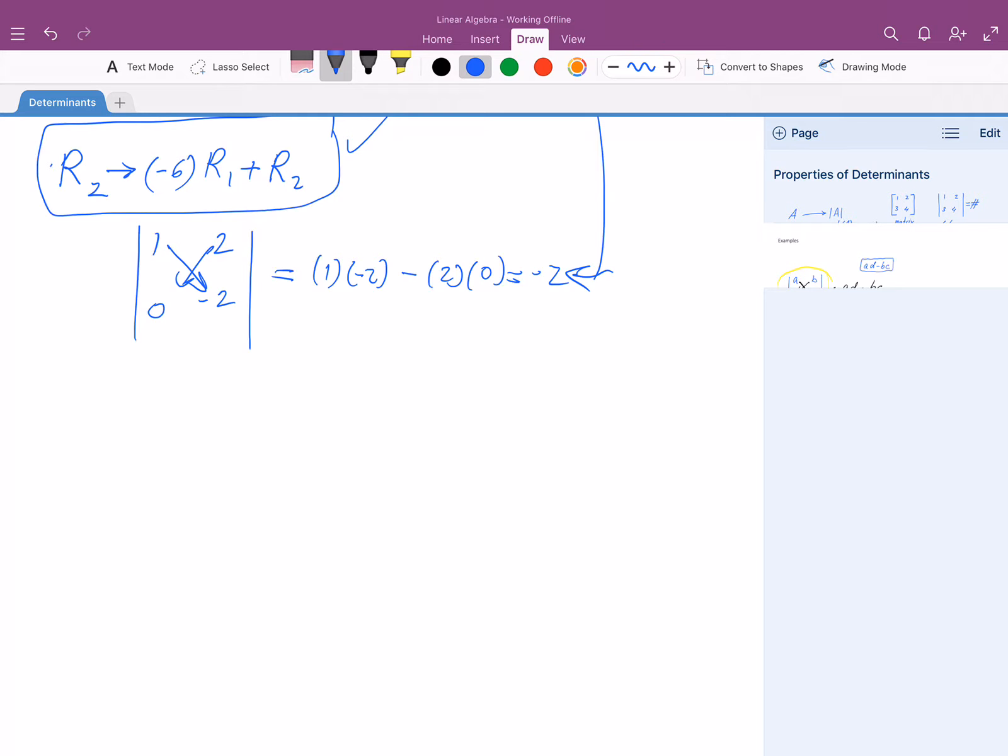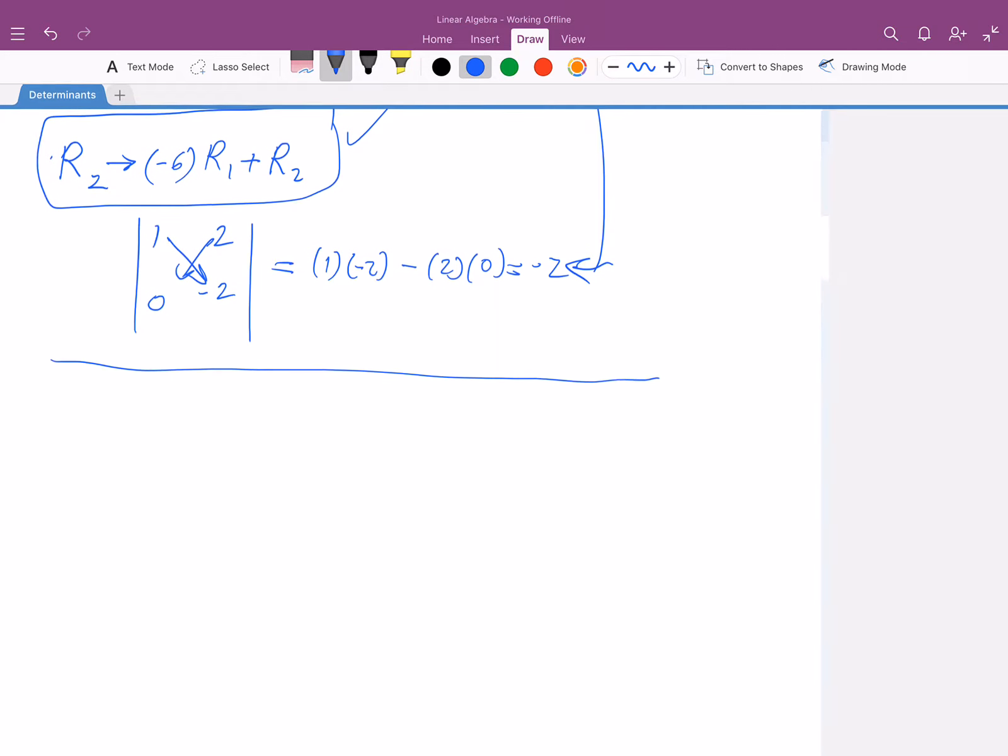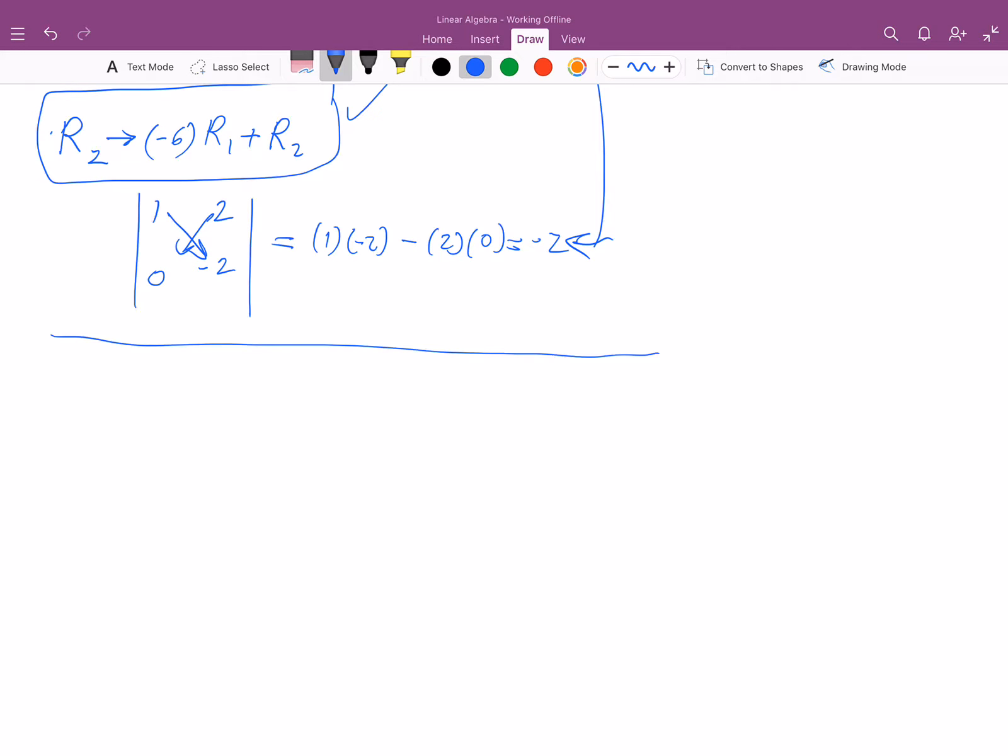In the last video, we learned the property that if you have a triangular matrix, then the determinant comes from a product of the diagonal entries.